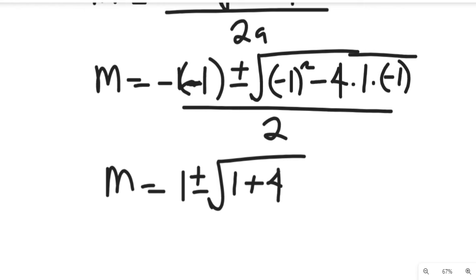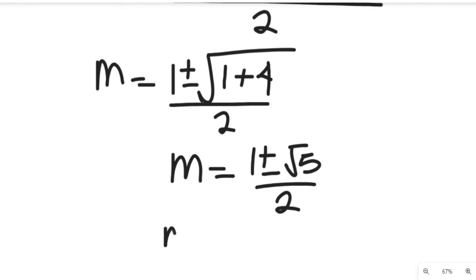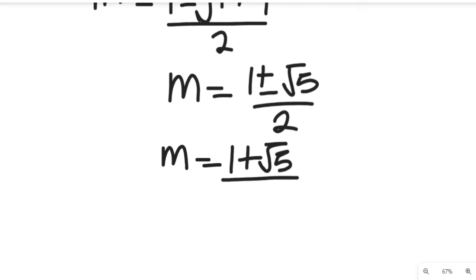So our m will now be equal to 1 plus or minus square root of 5, divided by 2. Expanding that, m equals 1 plus root 5, divided by 2, or m equals 1 minus root 5, divided by 2.